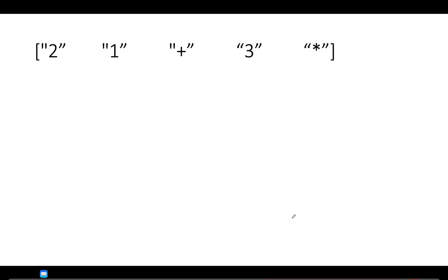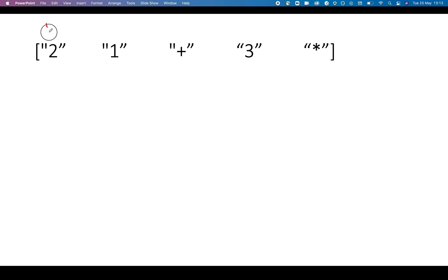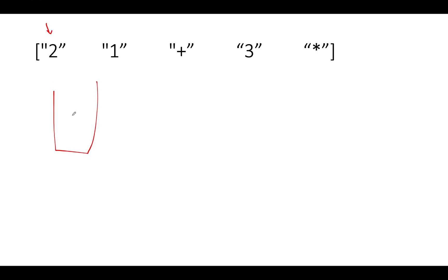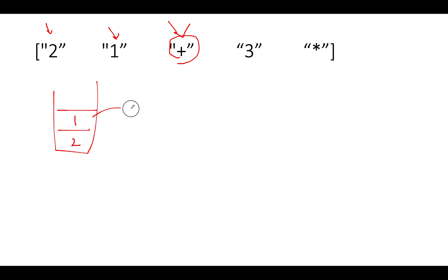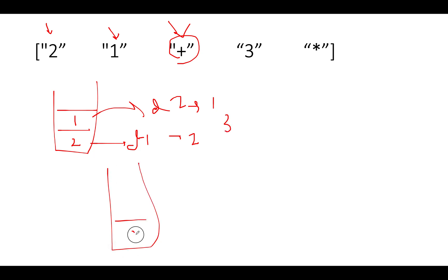Let's look at another example: [2, 1, +, 3, *]. We get two — not an operator, push into the stack. Now comes one — not an operator, push into the stack. Next we have a plus, which is an operator. Whenever you see an operator, pull out two elements and perform the operation, then push the result back. Element two is one, element one is two. Two plus one is three, so we push three back into the stack.